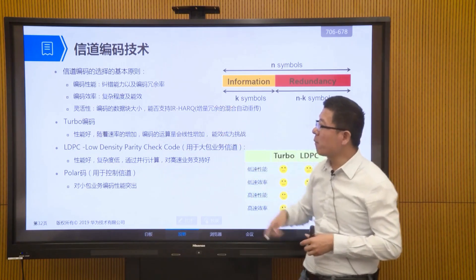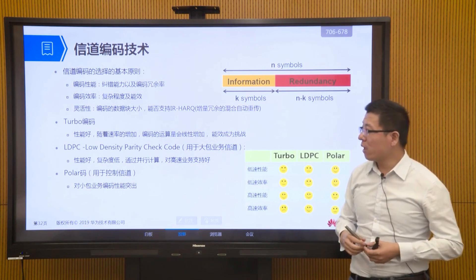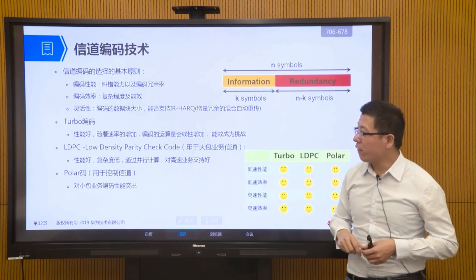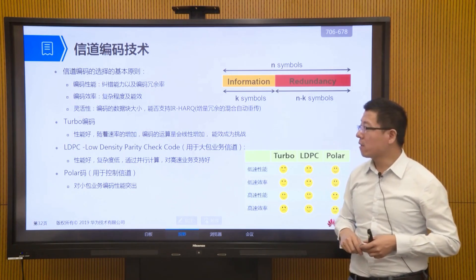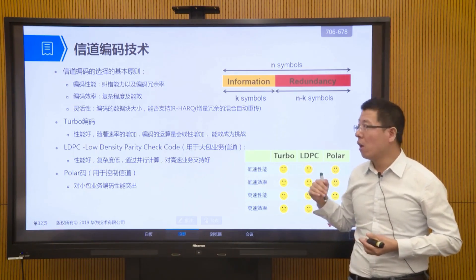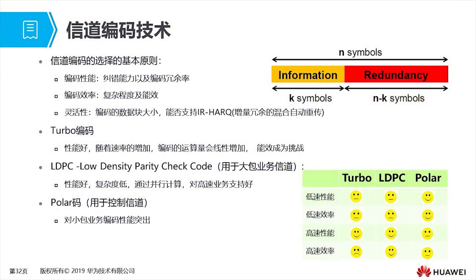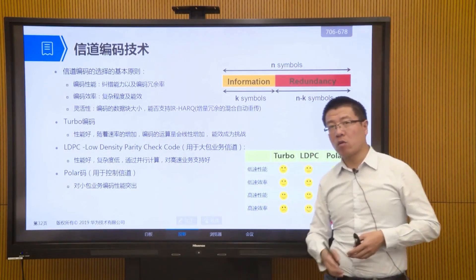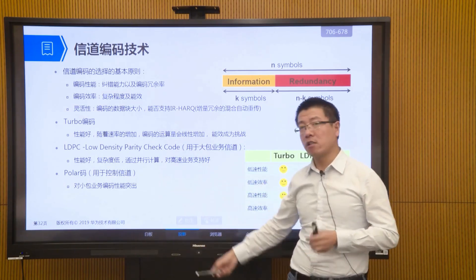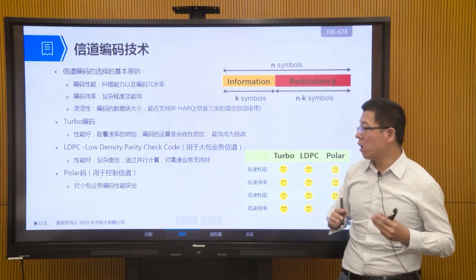At the beginning of 5G coding definition, there were three main coding schemes competing. One is turbo coding, mainly promoted by France, which enhanced the original 4G turbo coding with parallel processing. Another is LDPC coding — Low Density Parity Check code — mainly promoted by Qualcomm from the US. The third is polar codes, promoted by China's Huawei. In the end, LDPC coding and polar codes were chosen: polar code for control channels, which mainly use short codes, and LDPC for data service channels.